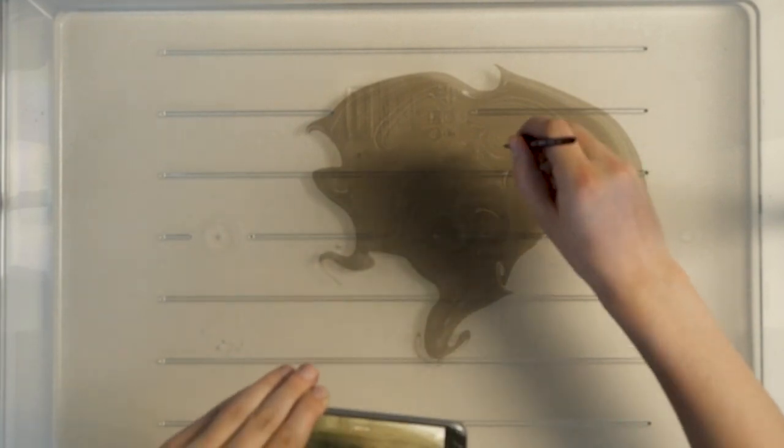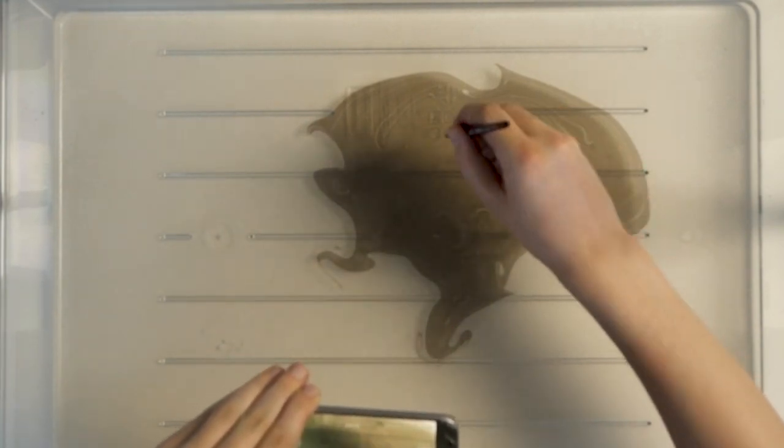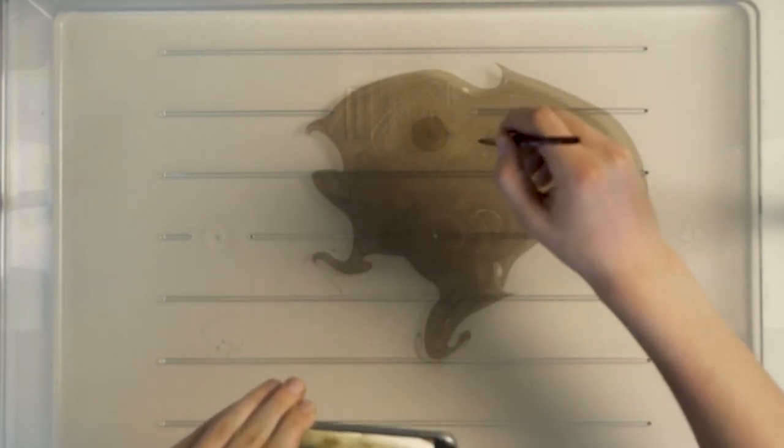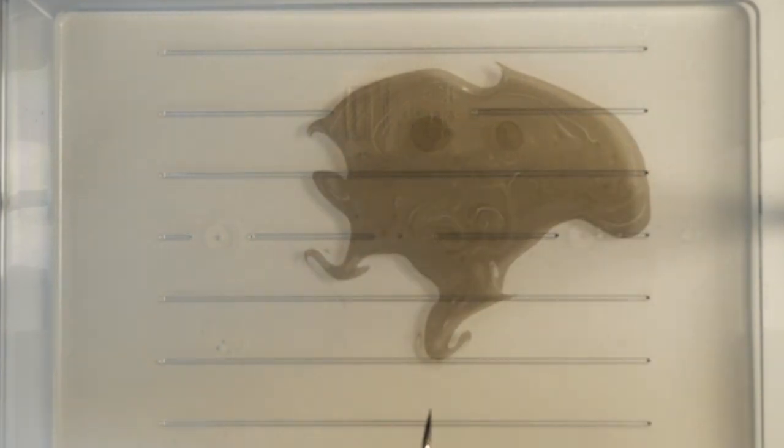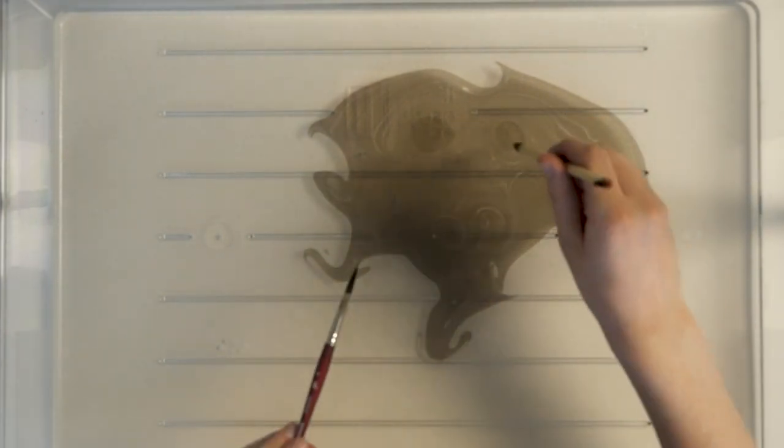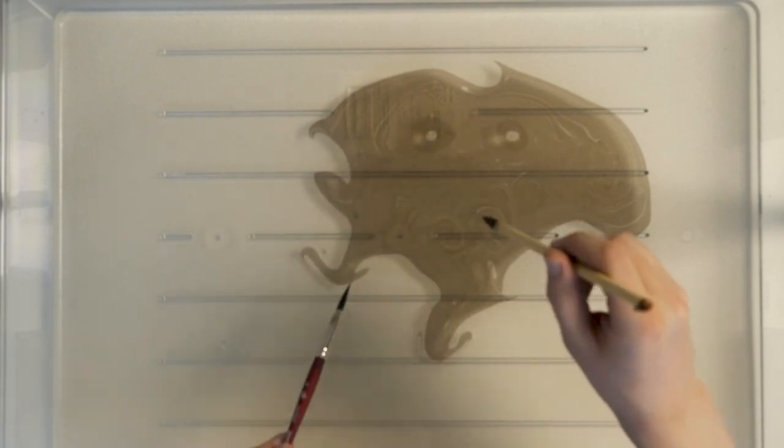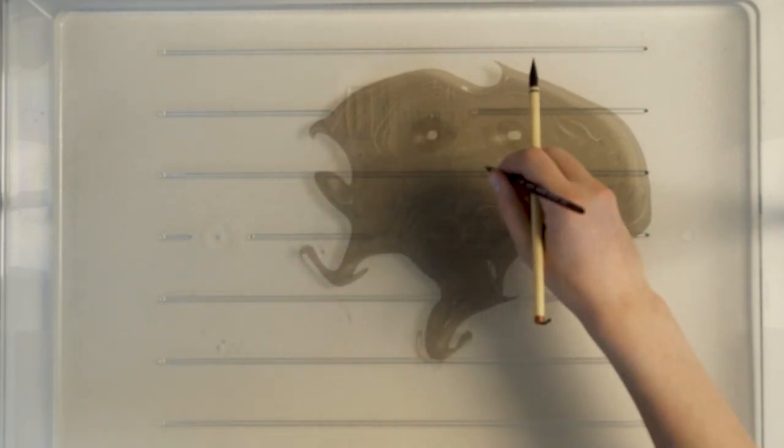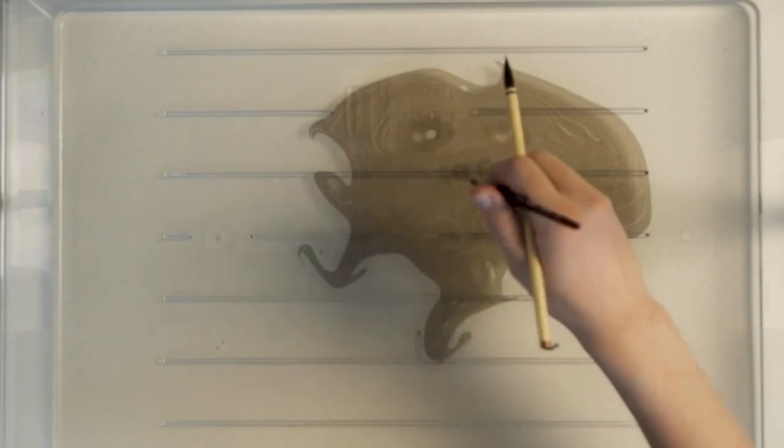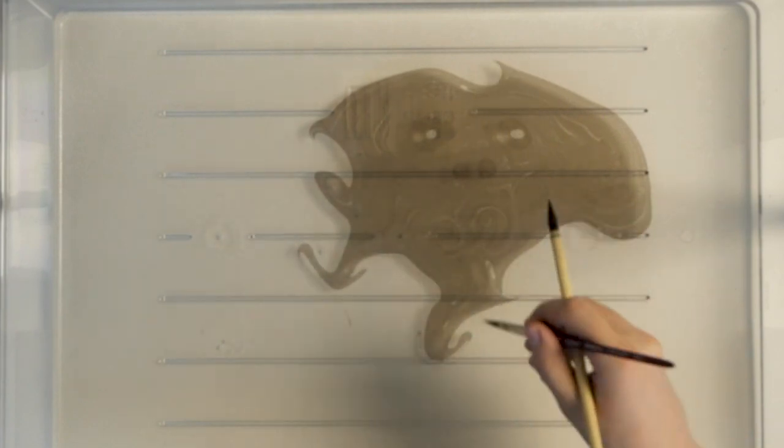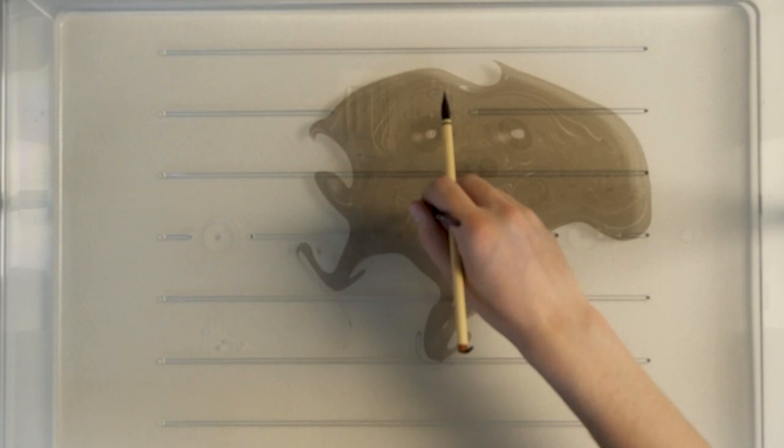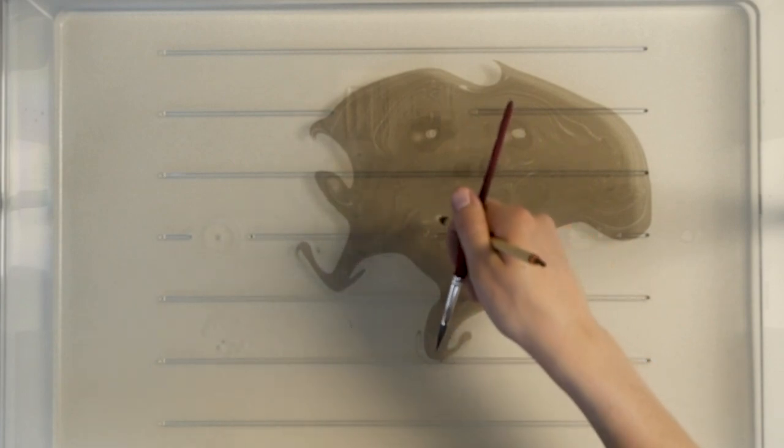So now I'm just going to take my brush again. Maybe add a little more ink here. Add a little more ink here. Give him like whites of his eyes. Fill in those. We can maybe give him some nostrils. And then I don't really know what to do here. Maybe just some...